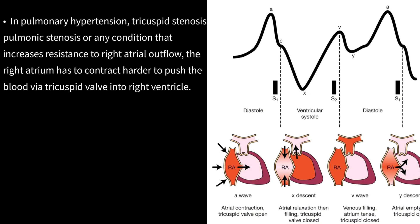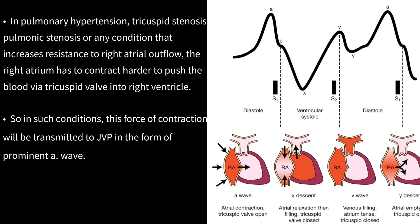In pulmonary hypertension, tricuspid stenosis, pulmonic stenosis, or any condition that increases resistance to right atrial outflow, the right atrium has to contract harder to push blood past the tricuspid valve into the right ventricle. In such conditions, this force of contraction will be transmitted to the JVP in the form of a prominent A-wave.